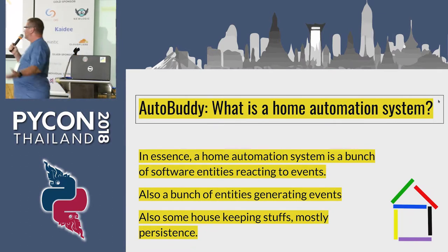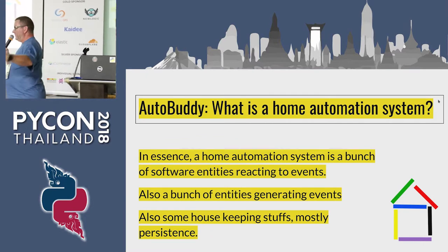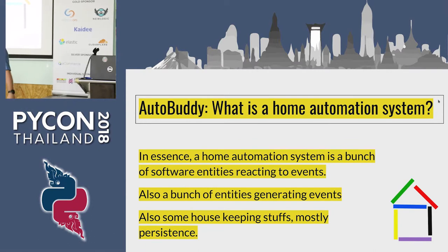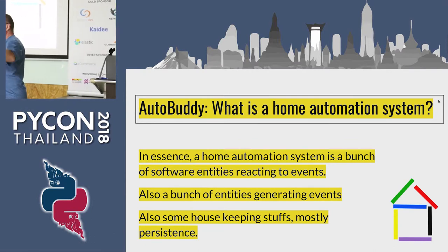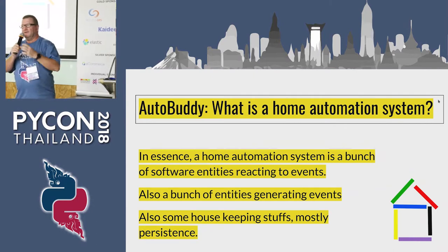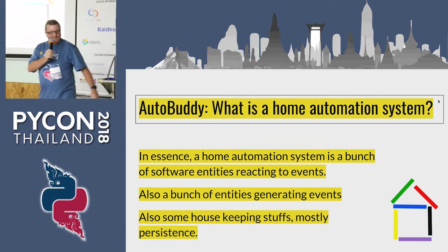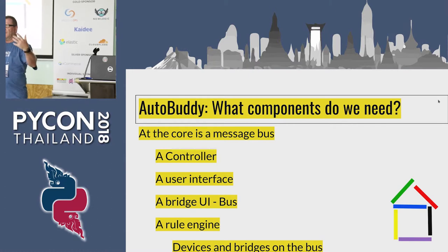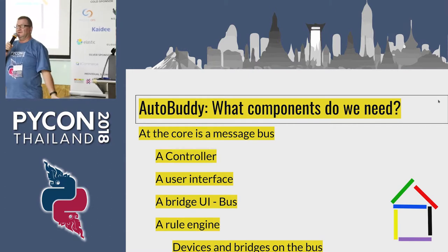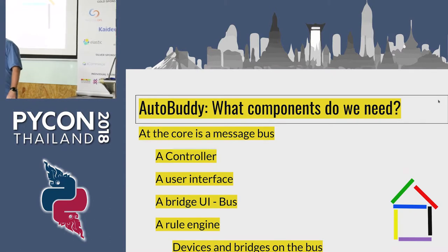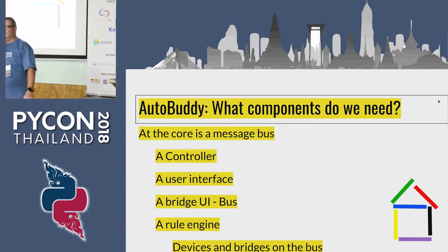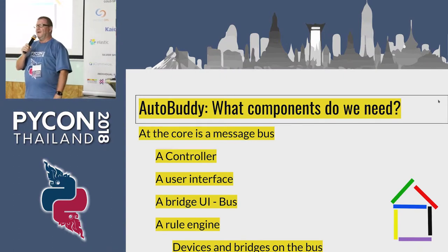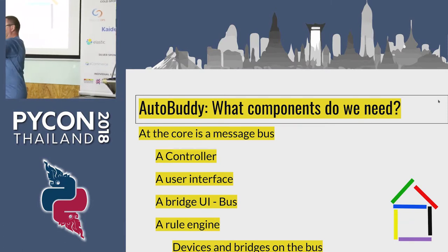So what is a home automation system? In essence, it's a message bus. You have a bunch of devices that generate events, a bunch of devices that handle and respond to those events, and then some housekeeping. To have that bus, you need a number of components: a controller, a user interface, a bridge between the UI and the bus (because the user interface is not in Python), a rule engine, and bridges to talk to the actual devices.